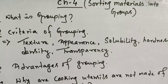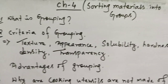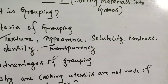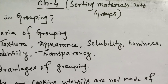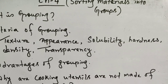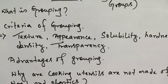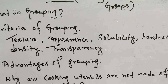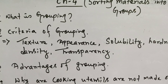The criteria on which you can group materials are: texture, appearance, solubility, hardness, density, and transparency. These are the basic criteria for grouping materials.